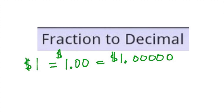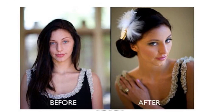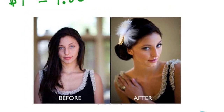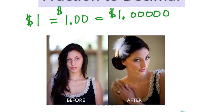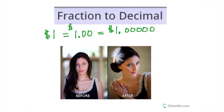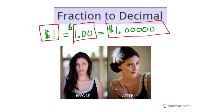Adding zeros to the end of a decimal only changes the way it looks — it does not change the value, just the way it looks. This picture here shows a woman with her hair long and down, and then they show her with her hair up. Does that change who she is? No, it just changes the way she looks. It's still the same person. In the same way with money, I have a dollar here, I have a dollar here, and I still have a dollar there. All we did was change the way it looks.